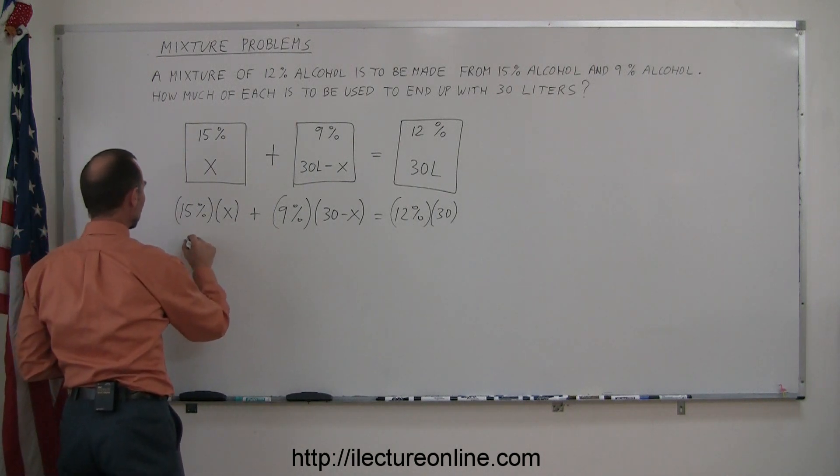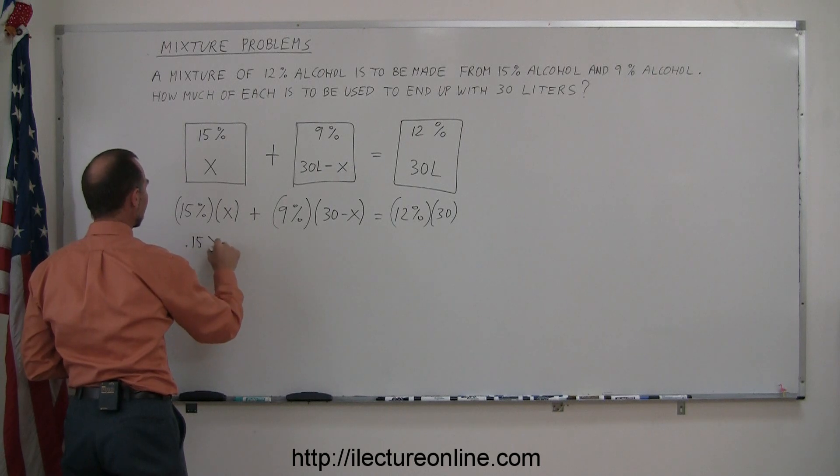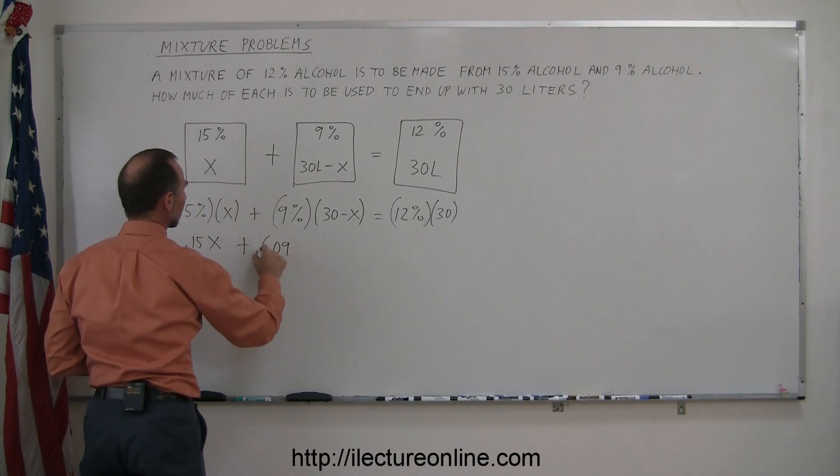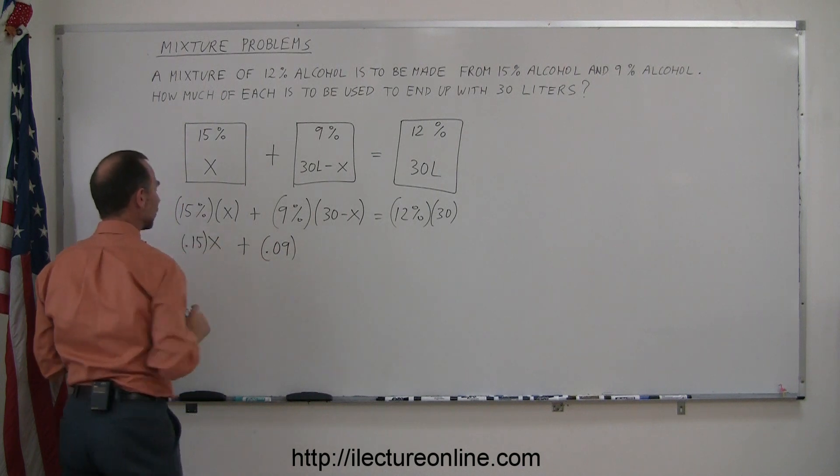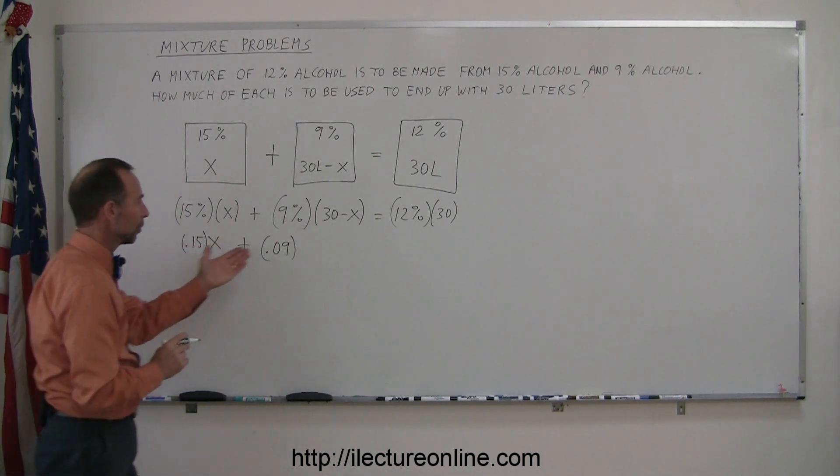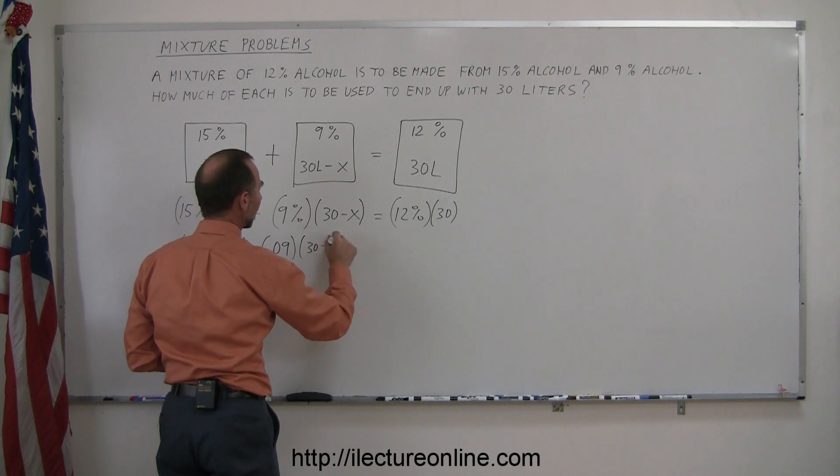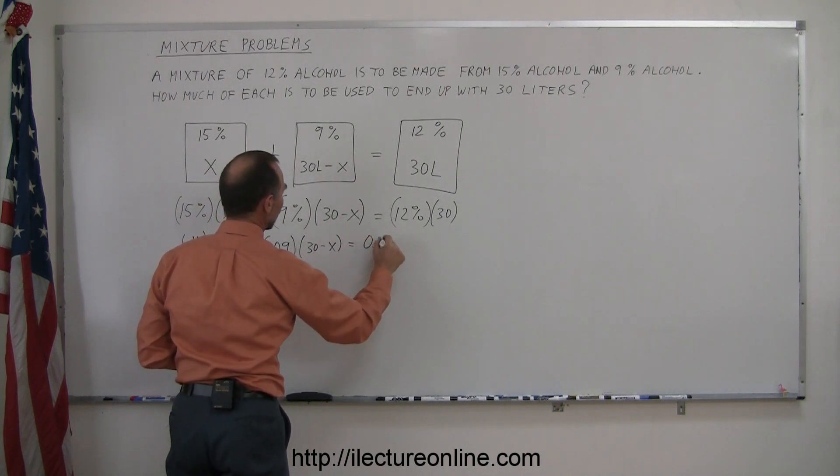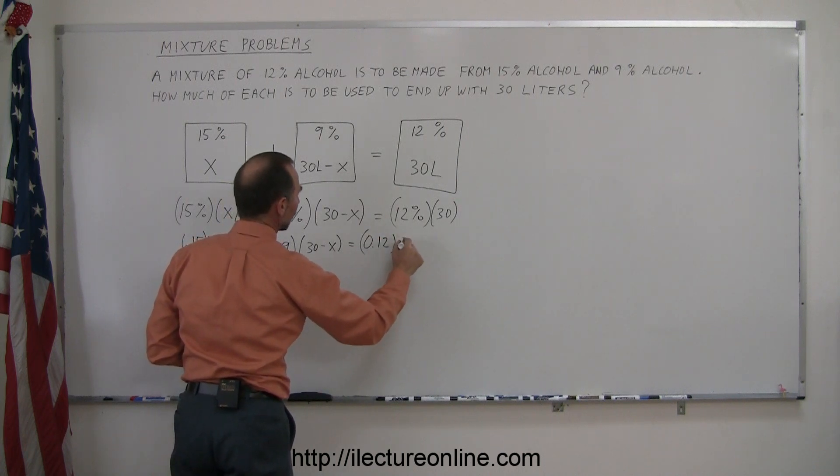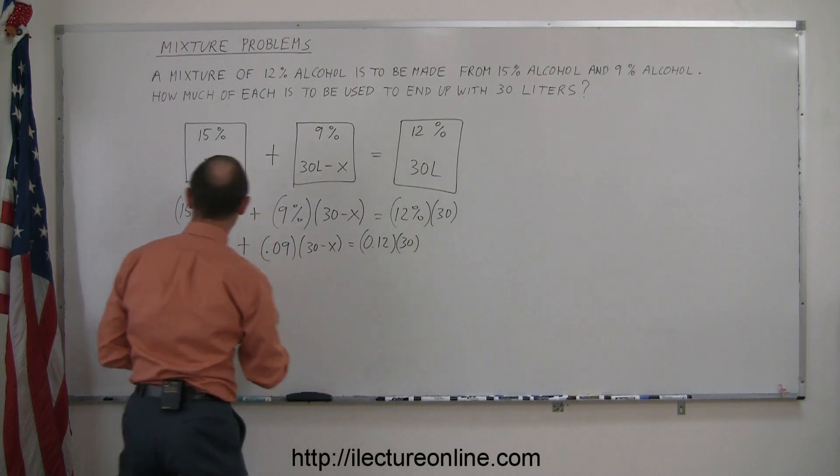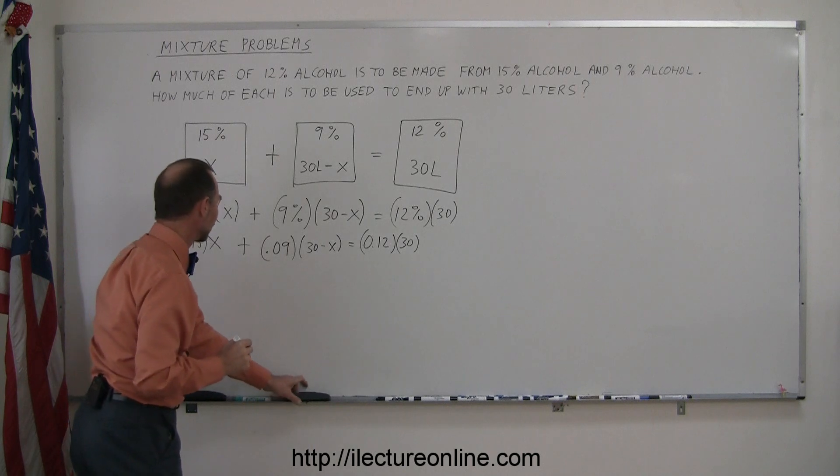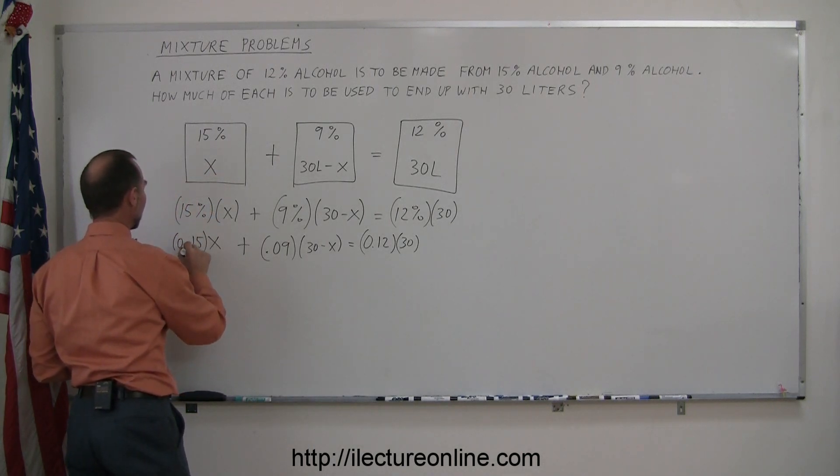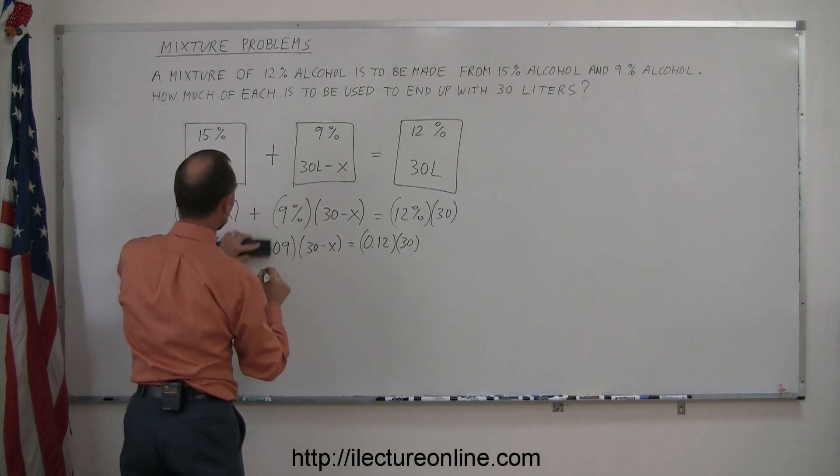So we have 0.15 times X plus 0.09, let me put parentheses around it just to keep it clean, 0.09 times 30 minus X is equal to 0.12 or 0.12 times 30. It's probably a better idea that I put a 0 in front so it's a little bit cleaner. So 0.15 and 0.09.